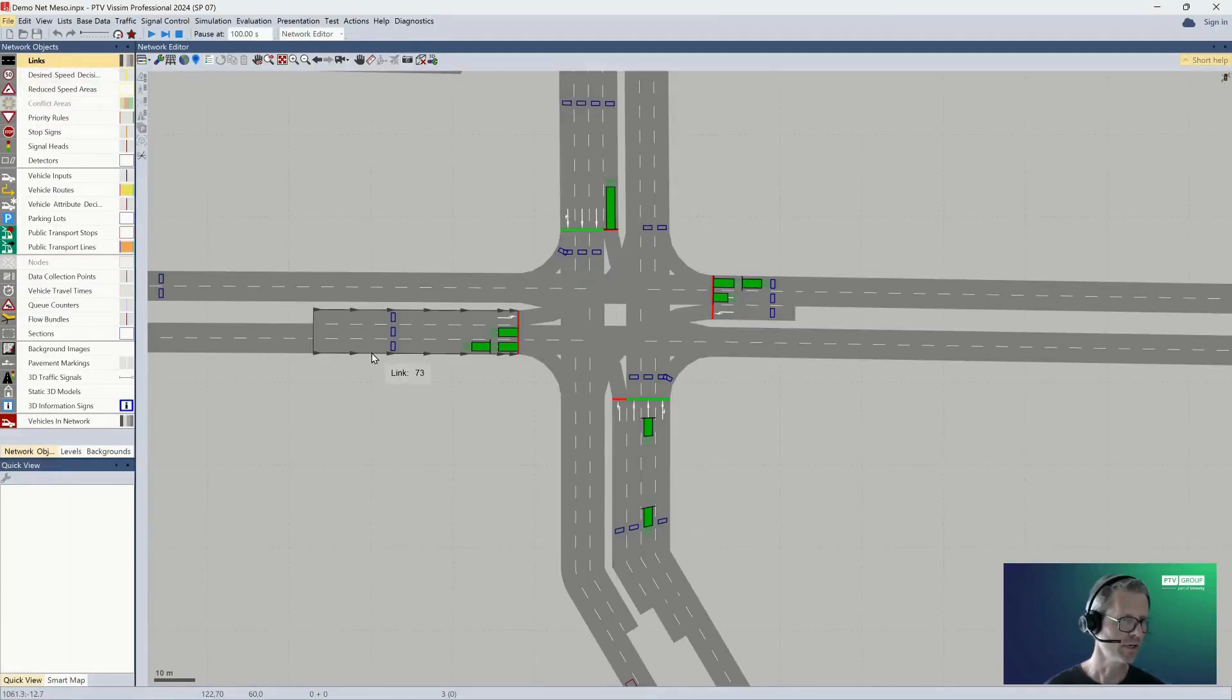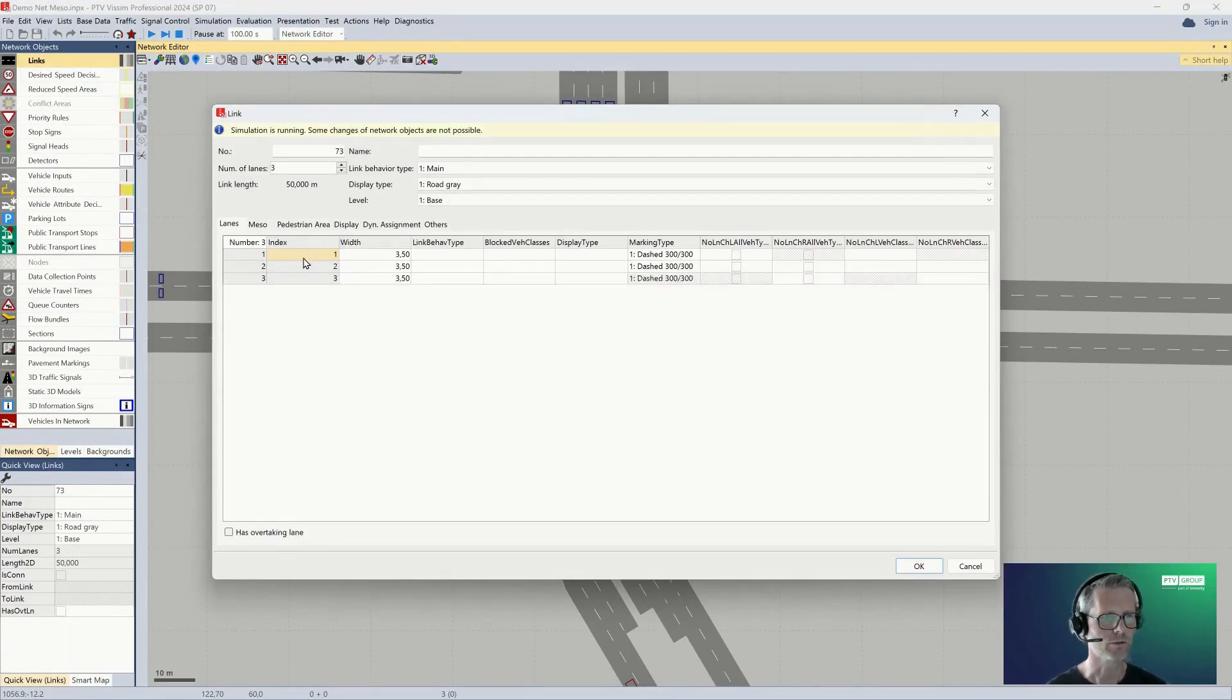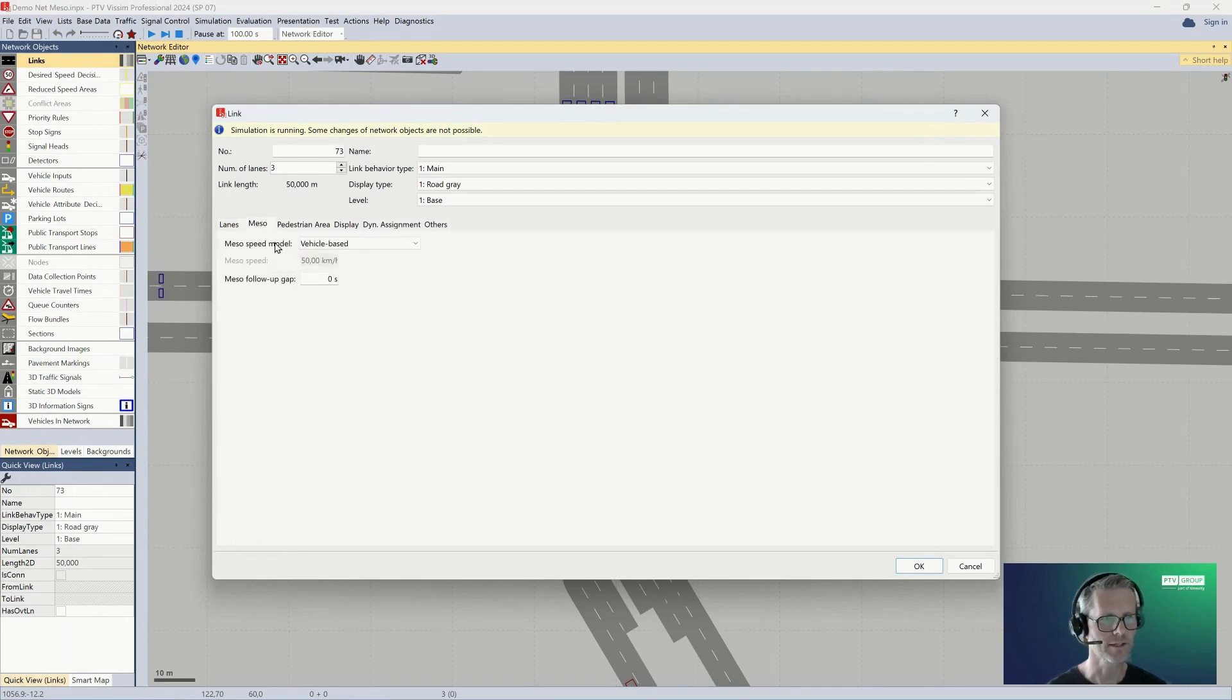When I switch back to my model and I open a dialog for the link, then on the meso tab you can find the meso speed model. You can choose between vehicle-based and link-based. If you choose link-based, you can define the speed here as well.